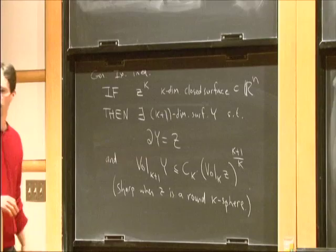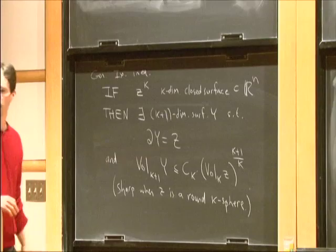And this is, again, sharp when Z is a round k-sphere and Y is a disk, an ordinary disk.